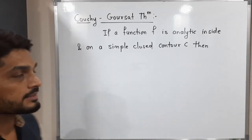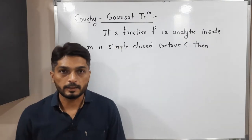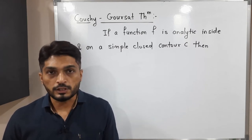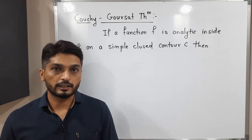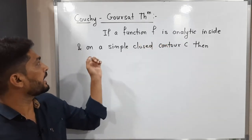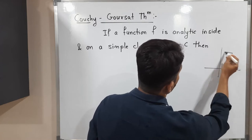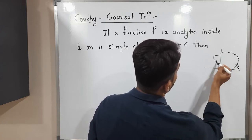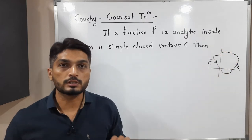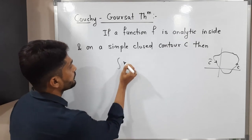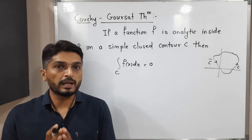Let us discuss the Cauchy-Goursat theorem. This theorem states that if a function f is analytic — meaning it is differentiable at a point and in some neighborhood of that point — and if f is analytic inside and on a simple closed contour C, then the value of the integration of f(z) dz over C is 0.